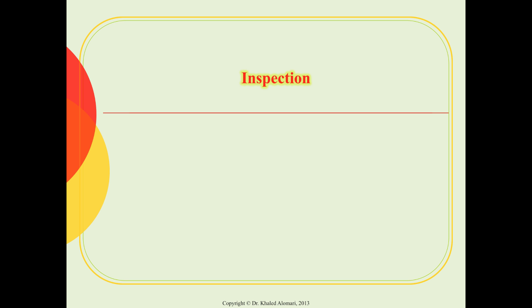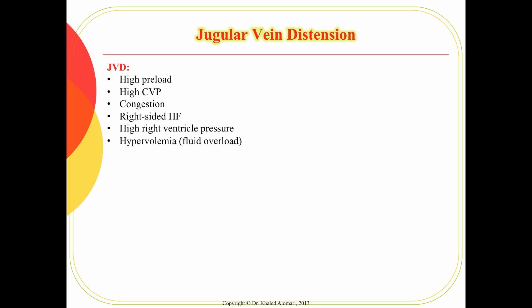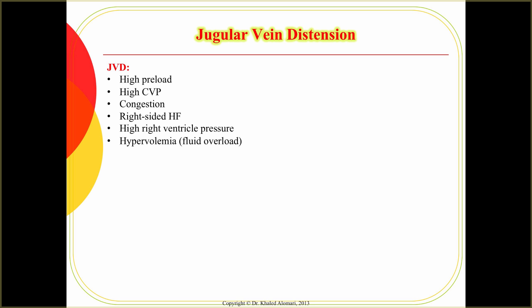With inspection, there are a few signs and symptoms you must be able to know and interpret. We'll start with jugular venous distension — JVD. JVD is an indication that there's a high volume of venous return, which is why it could indicate high preload. The CVP, which is a measurement of preload, will be elevated.